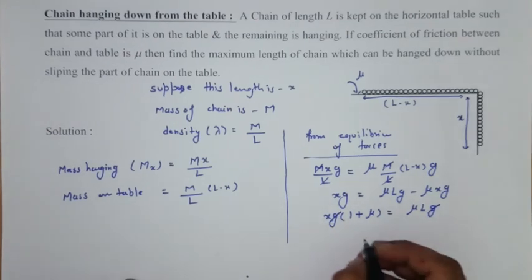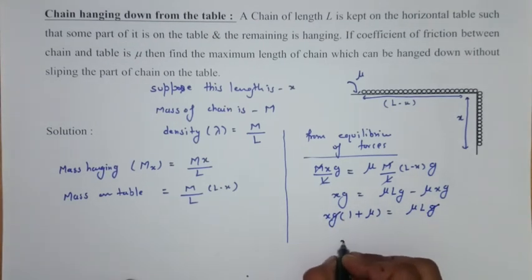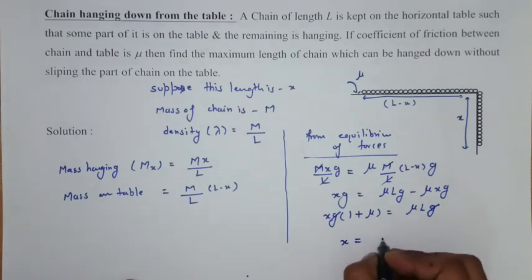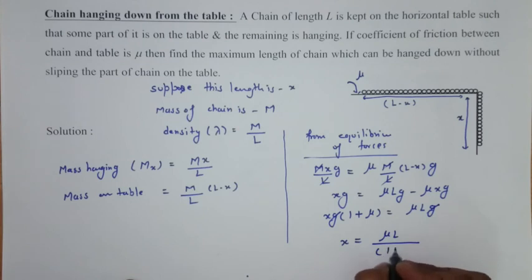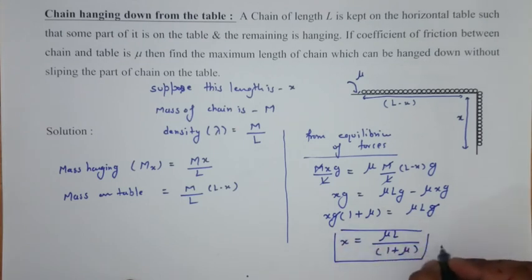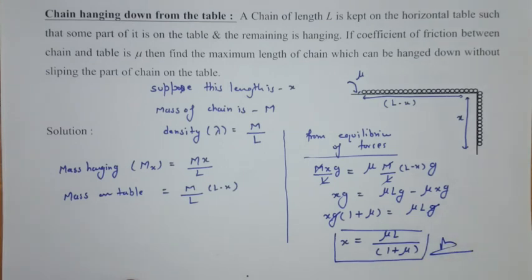we find xg times 1 plus mu equals to mu Lg. Cancel g, and here we found x, the part hanging down is mu L over 1 plus mu. This is our answer. Thank you.